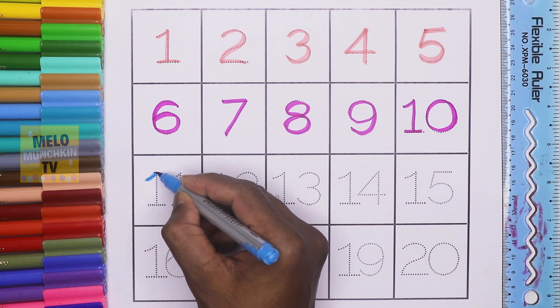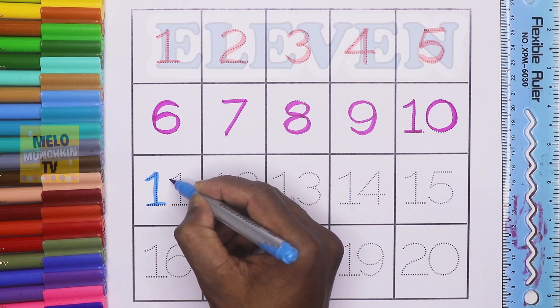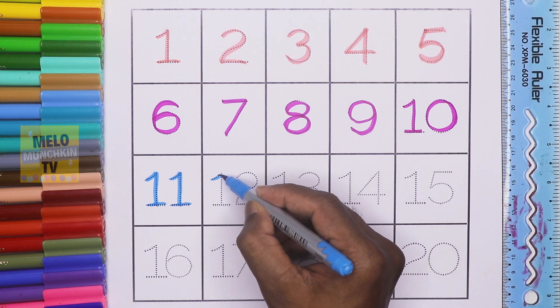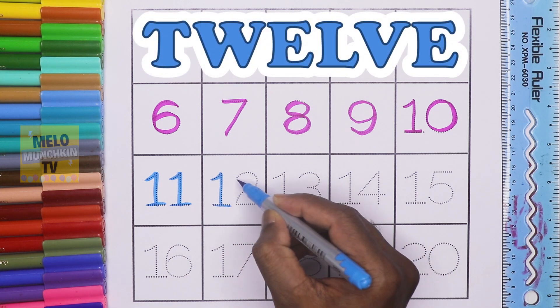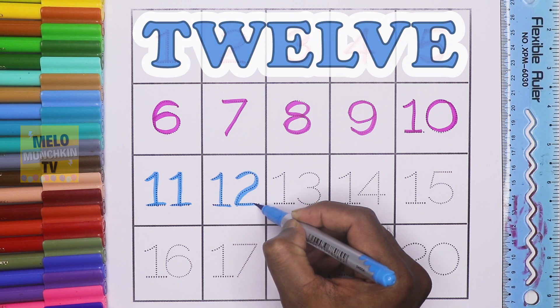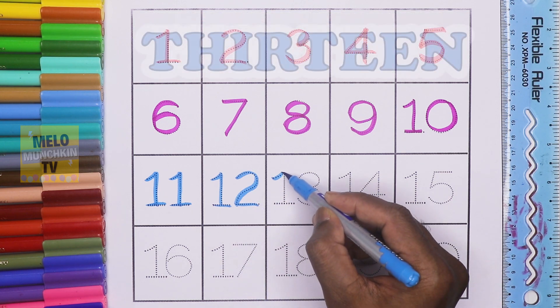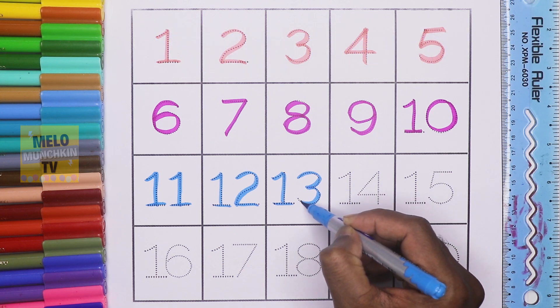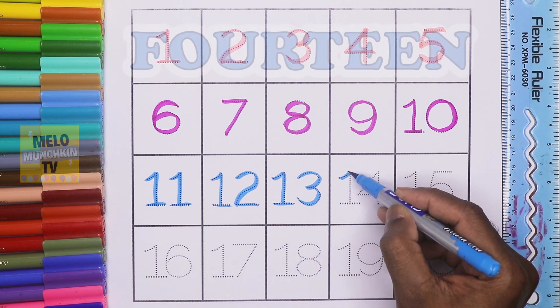This is number eleven, E-L-E-V-E-N, 11. This is number twelve, T-W-E-L-V-E, 12. This is number thirteen, T-H-I-R-T-E-E-N, 13.